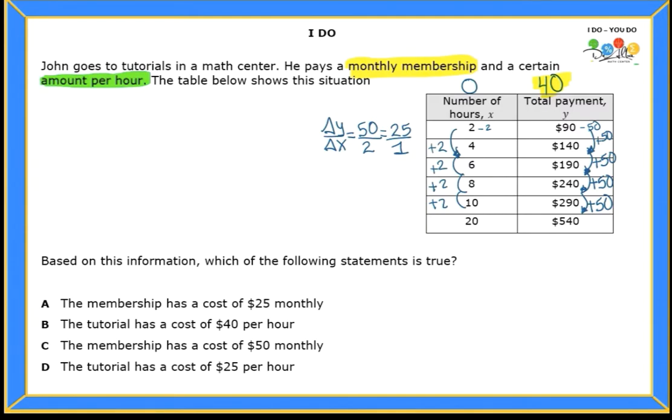So what I want to do next is I actually want to find the slope. So the slope, you'll find it by using a formula that is on your reference material, which says M equals Y sub 2 minus Y sub 1 over X sub 2 minus X sub 1. So I'm going to choose two points from the ones given to me. So I will choose 2 and 90, and I'm also going to choose 4 and 140.